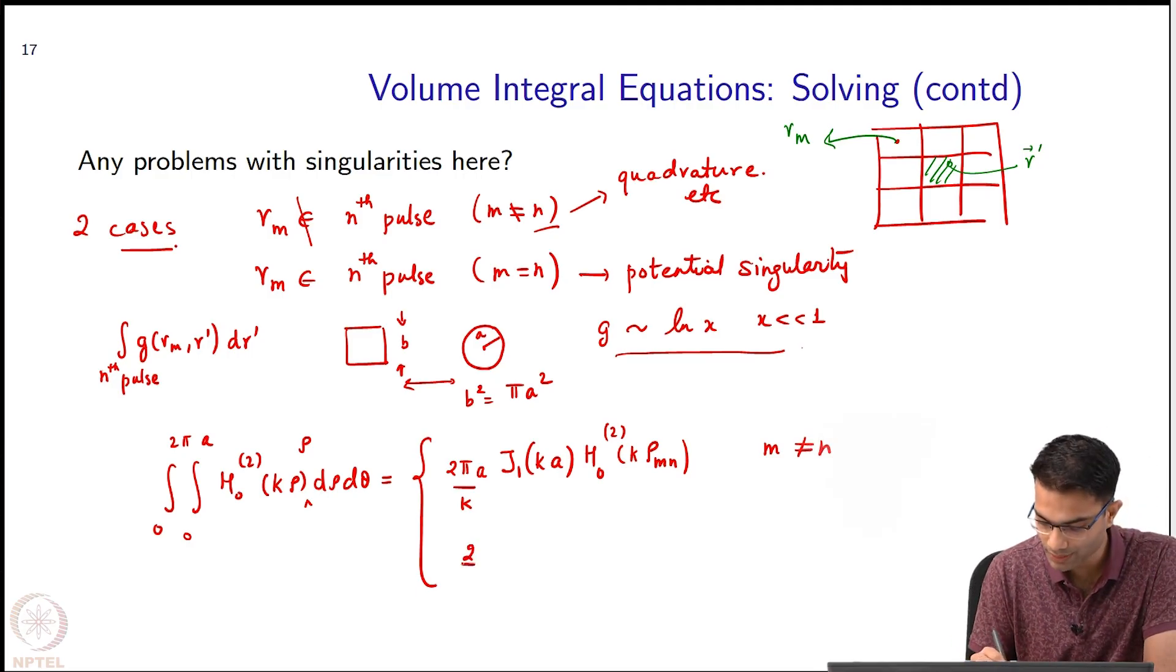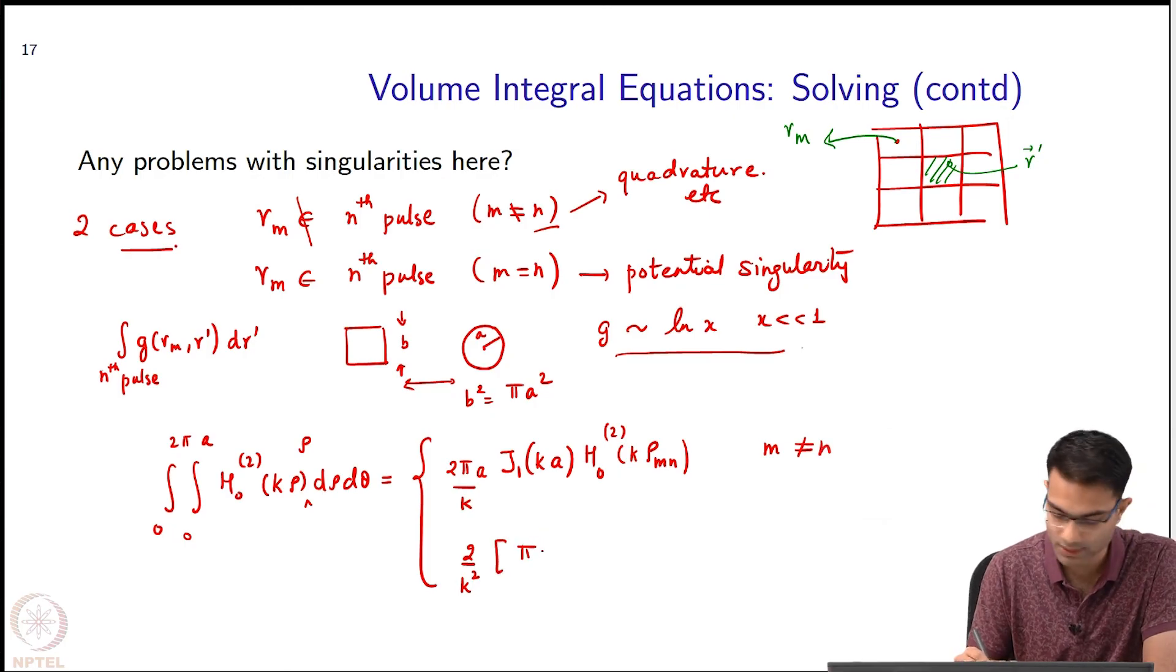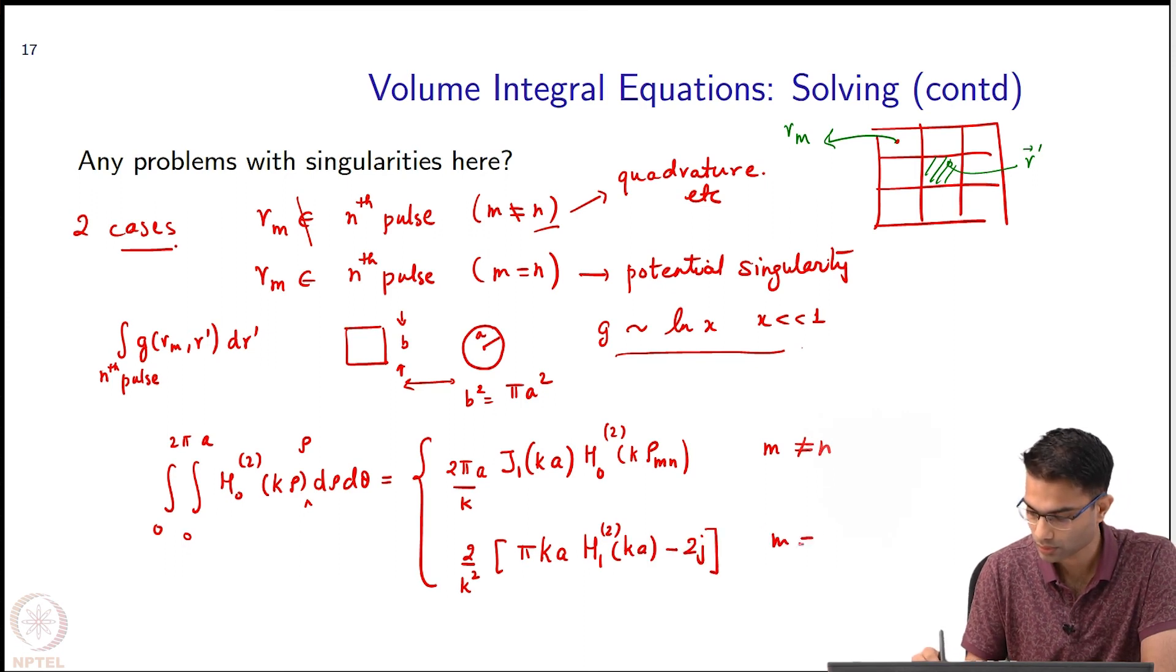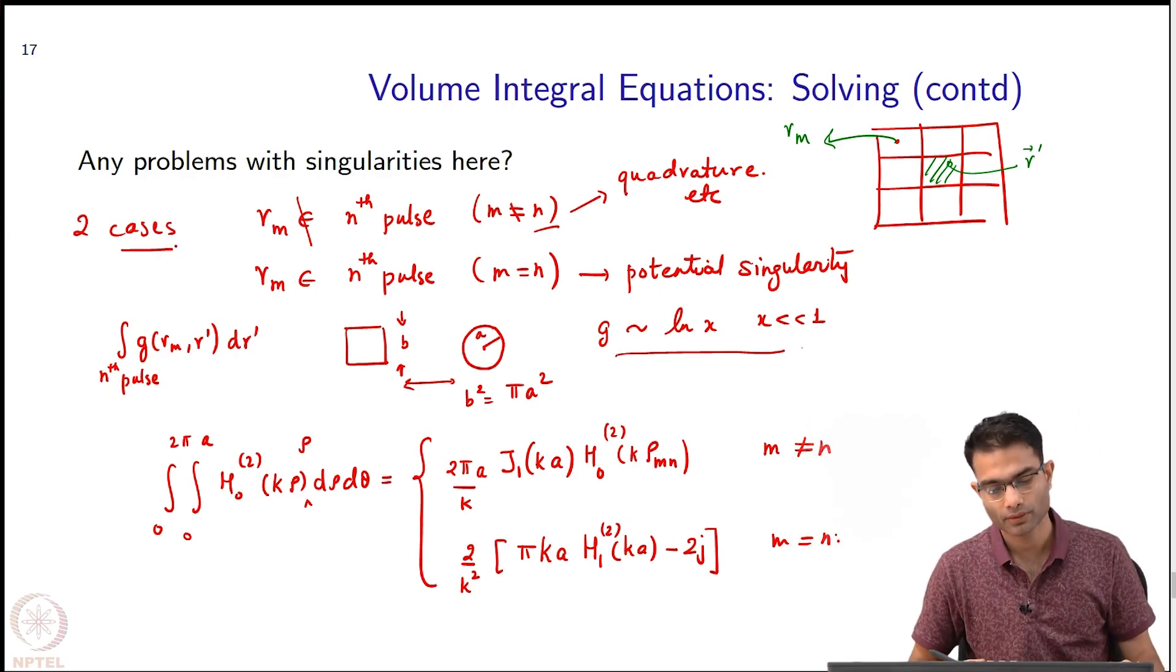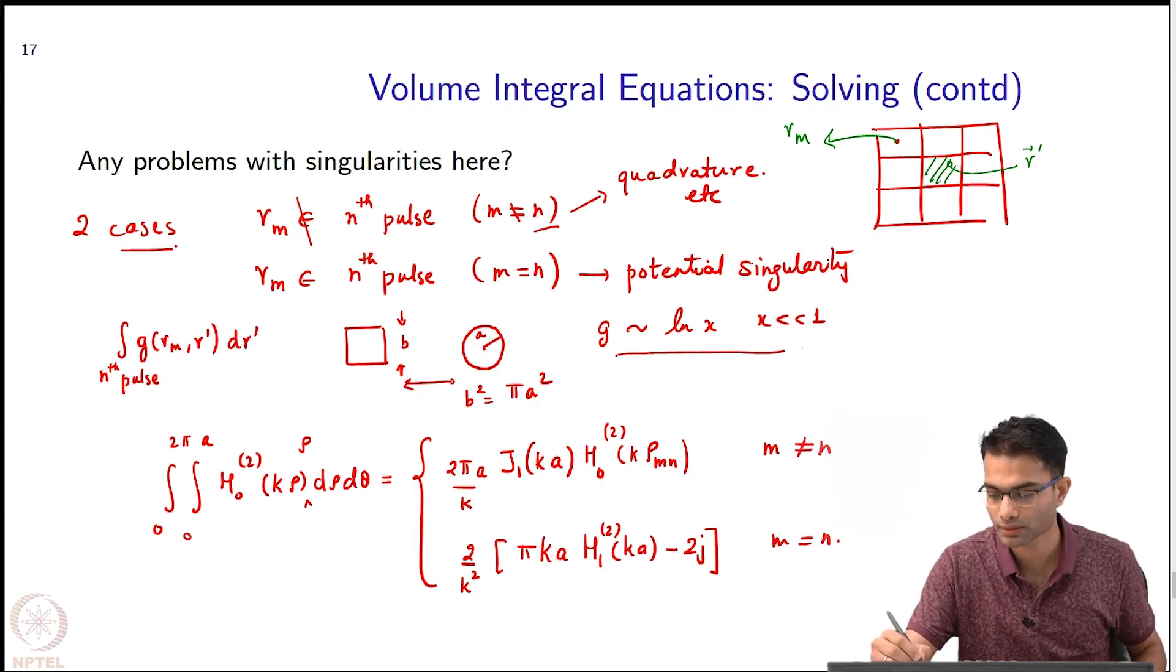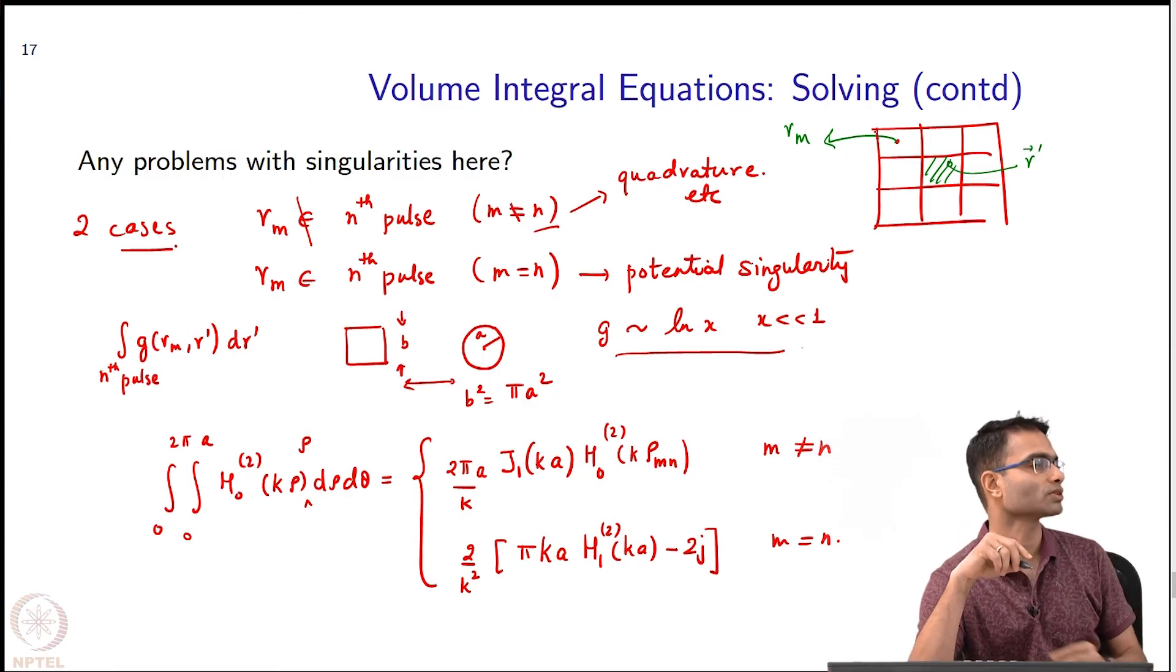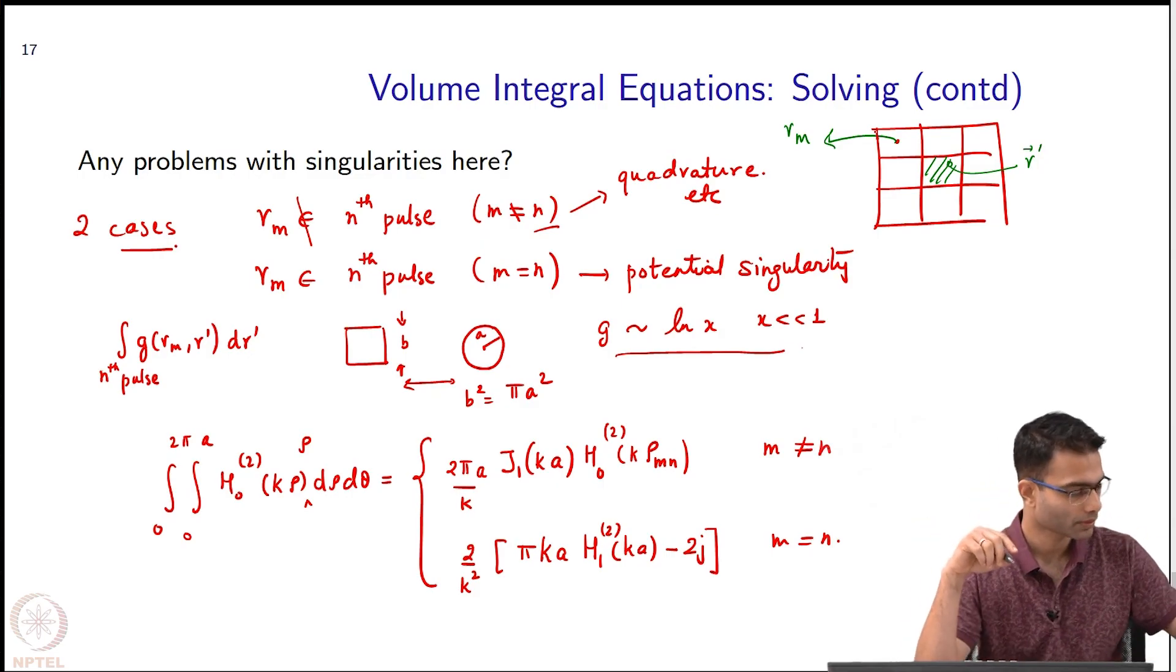The second expression is where the alleged singularity appears, and the expression is - again there is the closed form expression - π k A h_1^(2)(kA) minus 2j. This is just information. We can actually go and show this integration, it is not very difficult. So this turned out to be so much simpler than the surface integral equations because no singularities to worry about really.